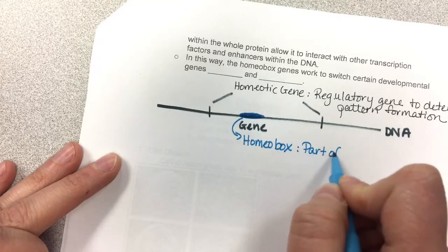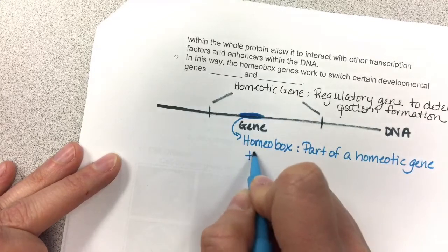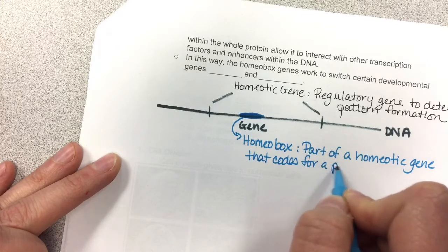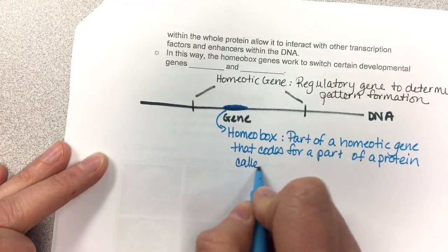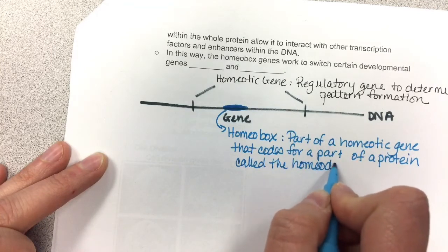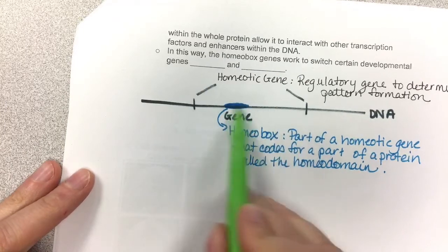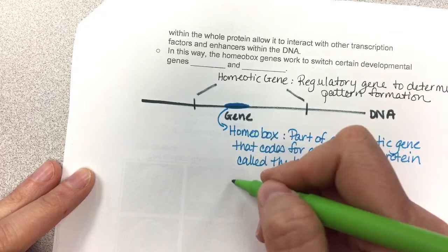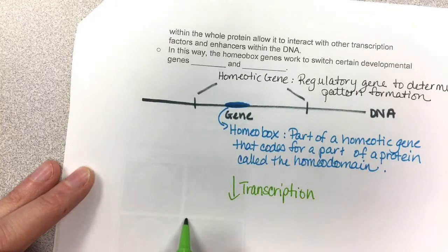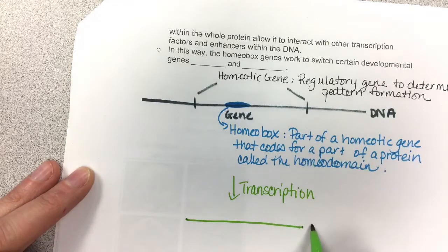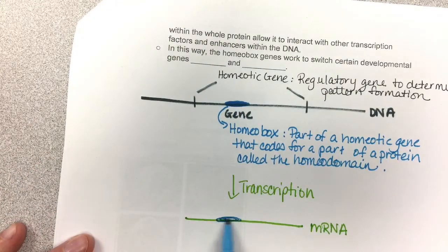It's part of a homeotic gene. That homeobox codes for a part of a protein called the homeodomain. So this gene has that special part of it. When transcription happens of that gene, you have the start of the gene and the end of the gene, and this is your mRNA — with that homeobox part of the mRNA included.